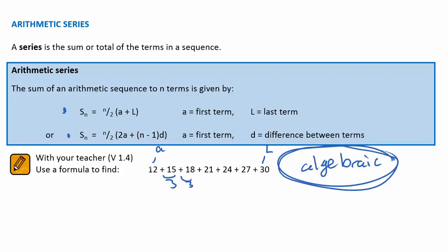In this first instance, a is 12 and d is equal to 3. So I can plug it straight into the equation and I'm after seven terms here. When I plug that into the calculator, I get 147.